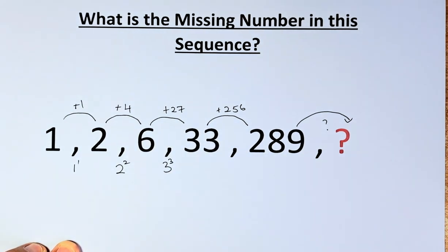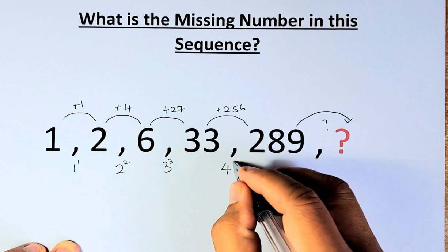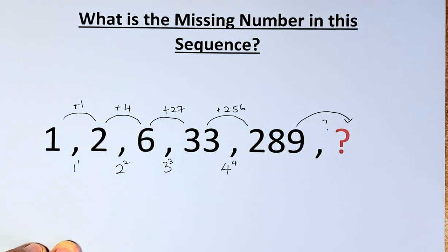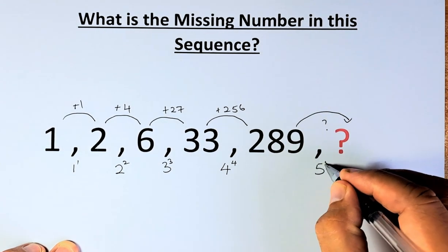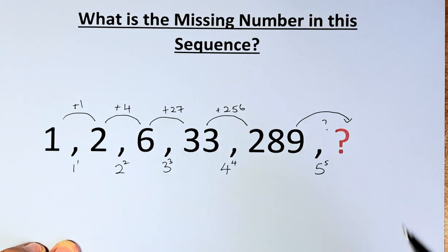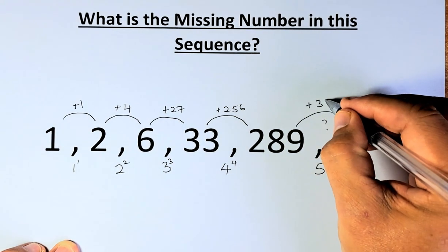4 times 4 times 4 times 4 is 256. So in case you do not know what we're going to add, it's going to be 5 to the power of 5. And 5 to the power of 5 is the number plus 3,125.